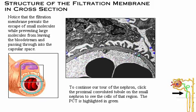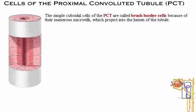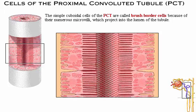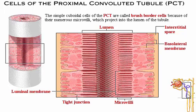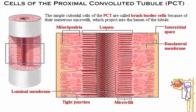The simple cuboidal cells of the proximal convoluted tubule are called brush border cells because of their numerous microvilli, which project into the lumen of the tubule. These microvilli greatly expand the surface area of the luminal membrane, adapting it well for reabsorption. Tight junctions between adjacent cells permit passage of water but limit the escape of large molecules. The highly folded basolateral membrane contains numerous integral proteins involved in passive or active transport. Numerous mitochondria provide the ATP necessary for these active transport processes.